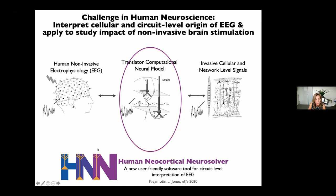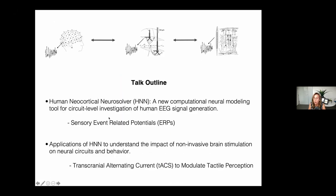In my talk, I'm going to start by giving you an overview of the background of the development of this new tool, then go through an example of how it can be used to study one of the most commonly measured EEG signals — a sensory evoked potential — using data from my lab on tactile perception. I'll then give an example of how HNN can be applied to study the impact of non-invasive brain stimulation, focusing on a study where we attempted to modulate tactile perception with transcranial alternating current stimulation.